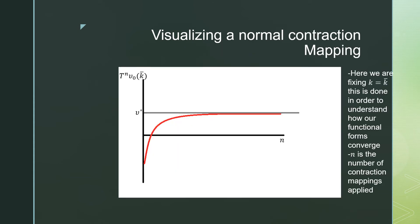So let's talk about visualizing a normal contraction mapping. If we look at our y-axis, our vertical axis here, we have T raised to the power of N, which is the number of contraction mappings being applied to some initial V0 at K bar. So V is a function of K bar as opposed to K because we want to understand how our functional form is going to change, and as our functional form changes, the output is going to change.